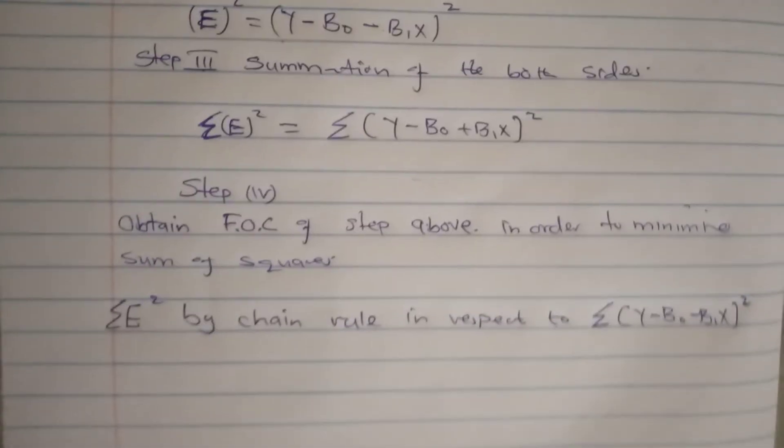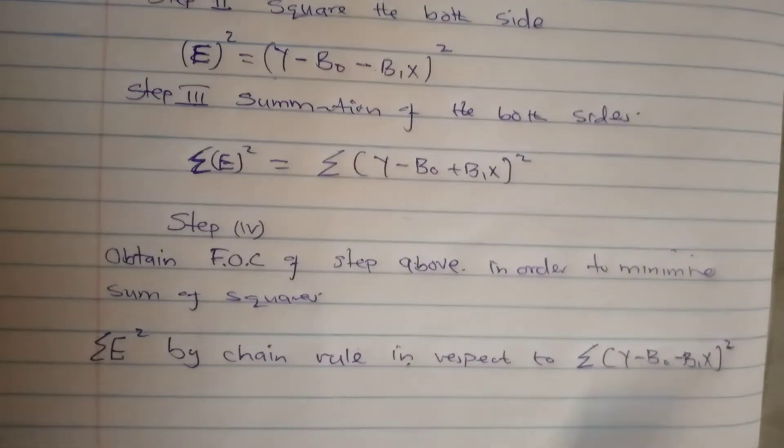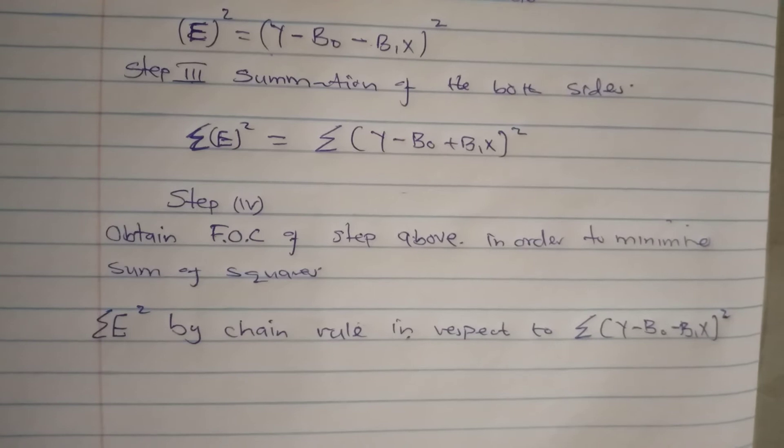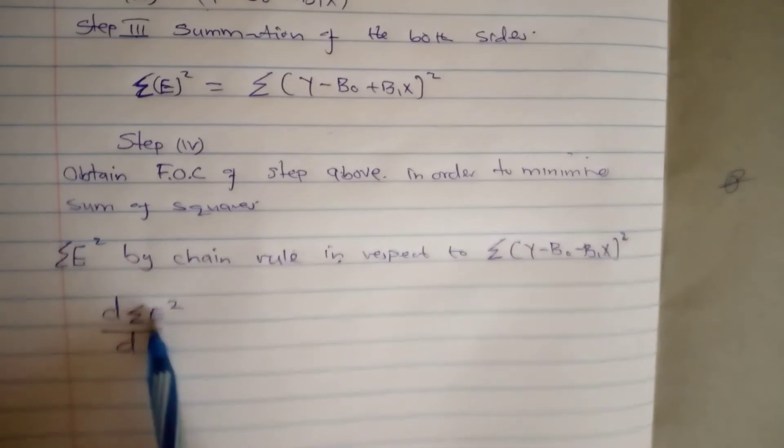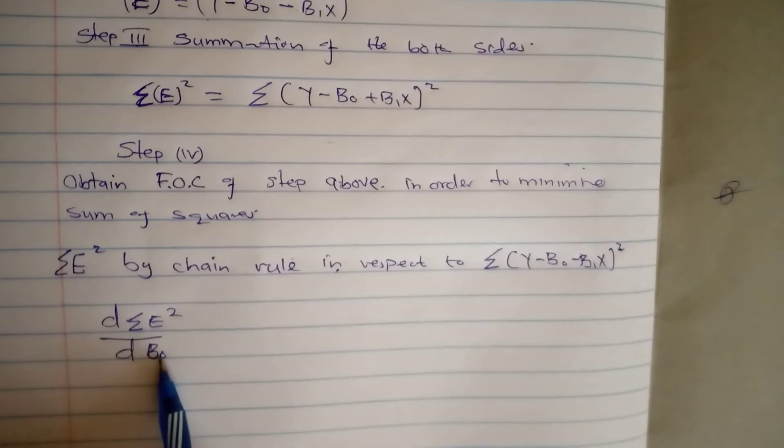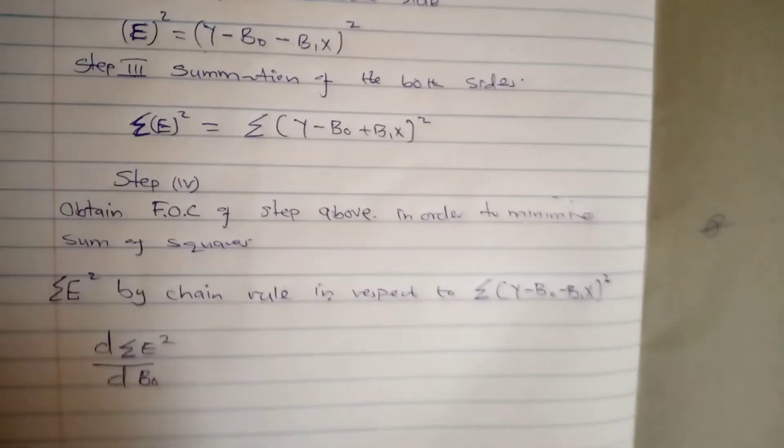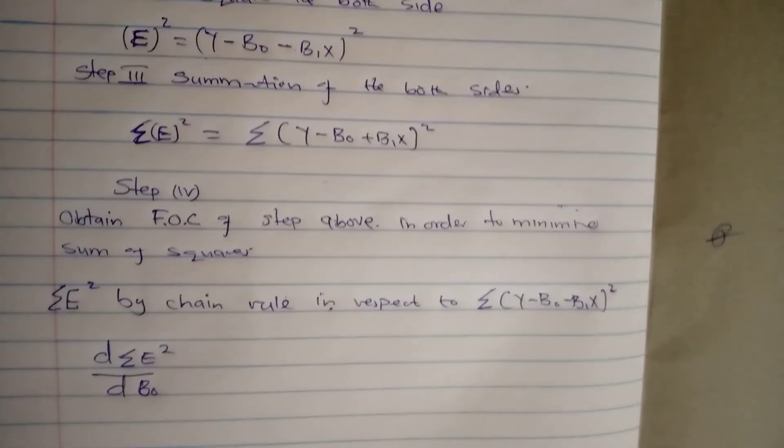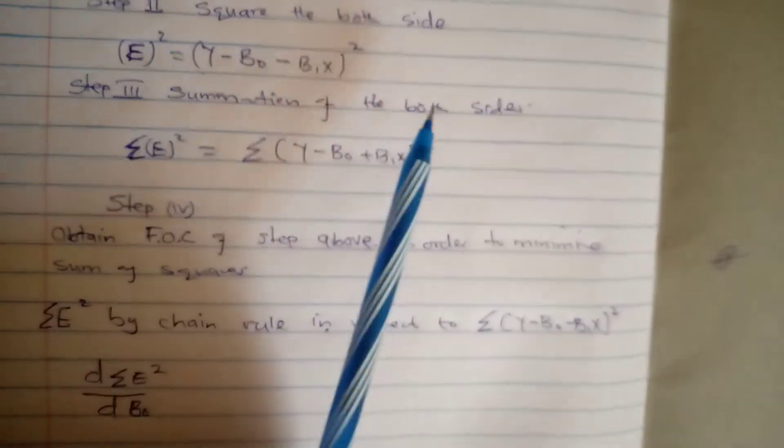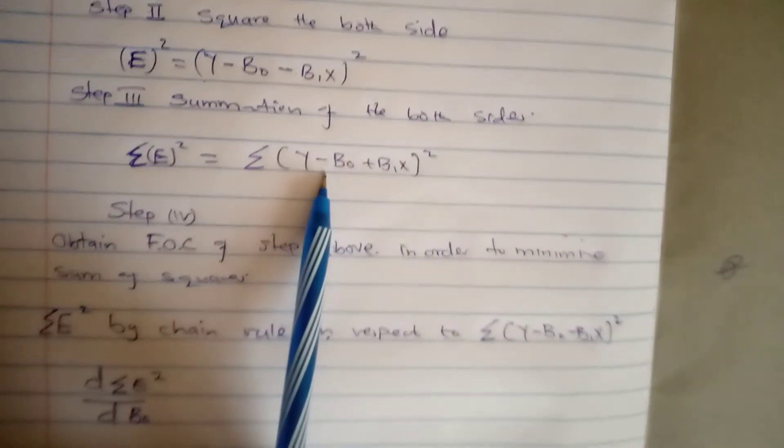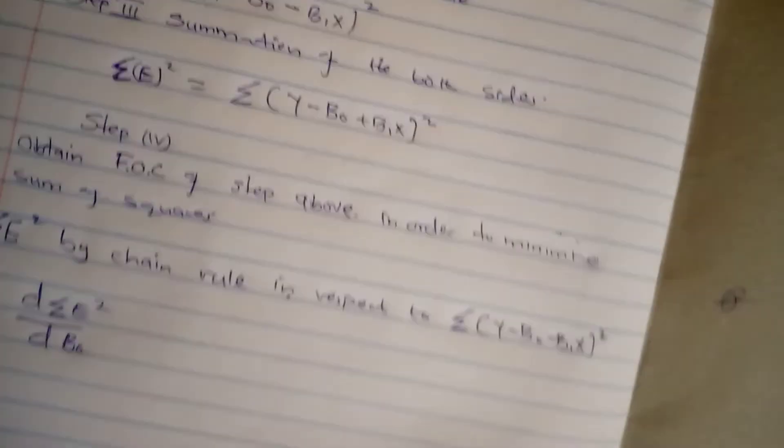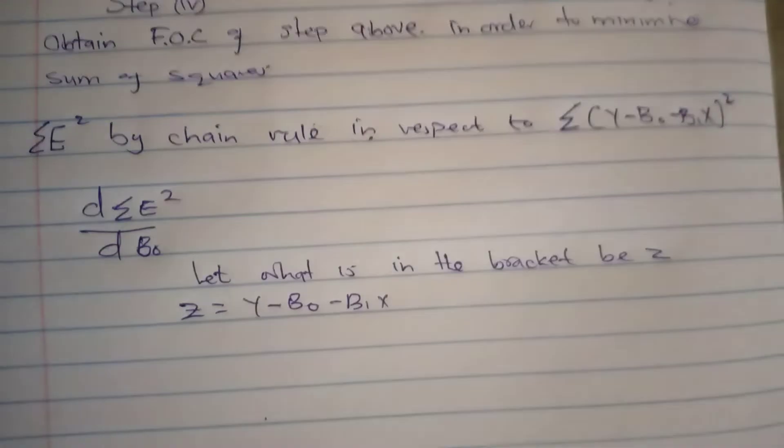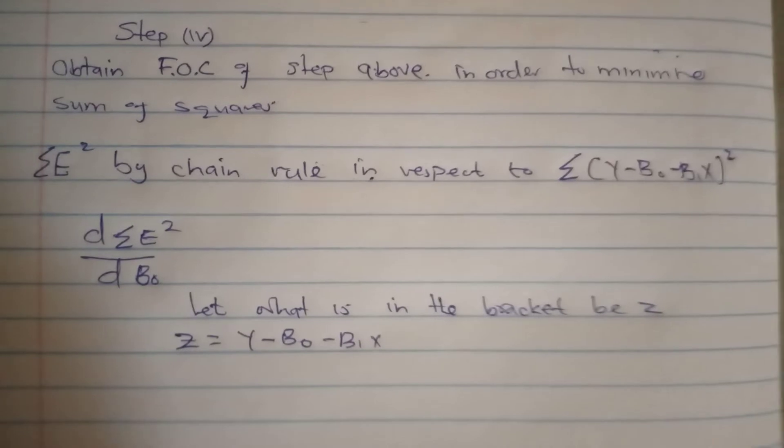Let's continue. We differentiate summation of E squared with respect to B₀ from this formula. Since B₀ is in that bracket and there is a square, it looks hard to do. So we make everything in the bracket to be Z.